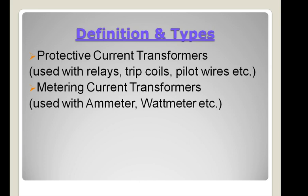Protective current transformers are used with relays, trip coils, pilot wires, etc., whereas metering current transformers are used with ammeters and wattmeters. In the case of protection CT, the CT secondary current at maximum load should not exceed the continuous current rating of the applied relay.